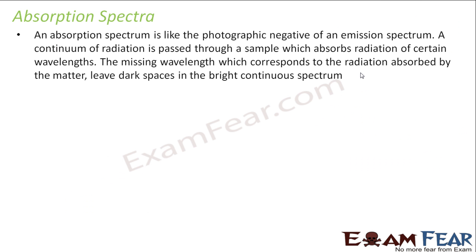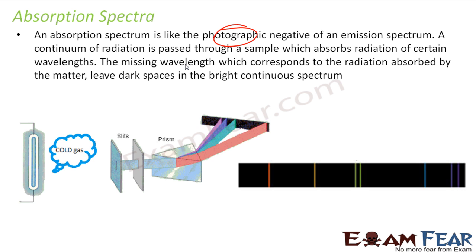Absorption spectrum is just reverse of emission spectrum. It is like a photographic negative of an emission spectrum. So in this case, we just pass a continuous radiation. Okay, we just pass all this radiation. This has all these lights, white light you can say.